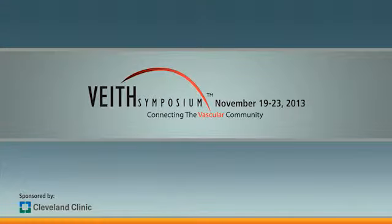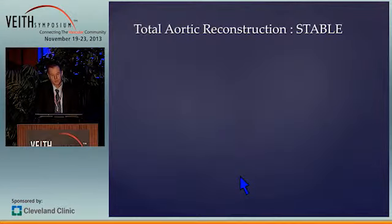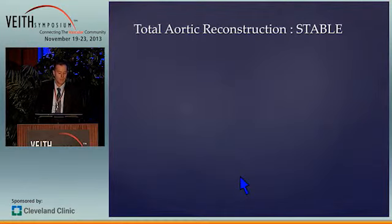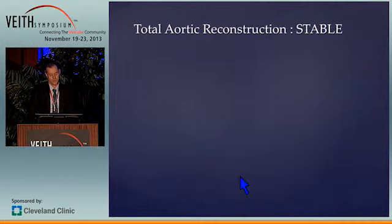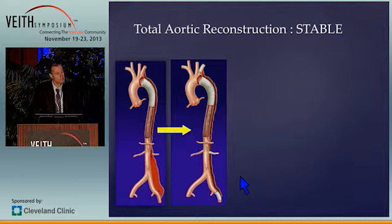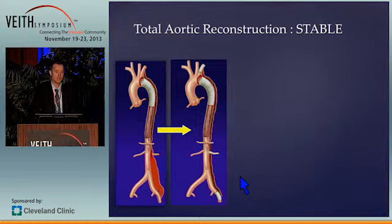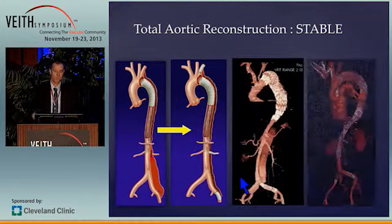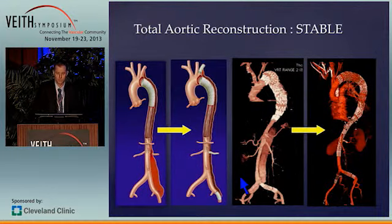We've heard from our previous talkers that significant degenerative changes can occur in the more distal aorta following proximal entry tear closure. With this in mind, the STABLE concept was evolved about a decade ago by our group — a Stage Total Aortic and Branch vessel endoLuminal rEpair — to deal with this issue of ongoing degeneration. STABLE is constituted by proximal entry tear closure with an endograft, the subsequent remodelling of the more distal collapsed true lumen with bare metal stents, and the use of ancillary techniques to engineer the false lumen and enhance thrombosis to provide a more complete and total aortic repair.